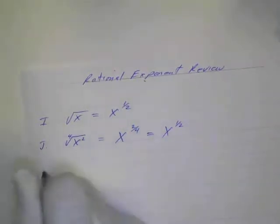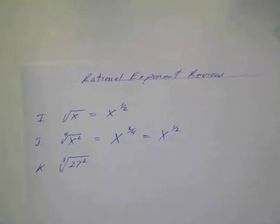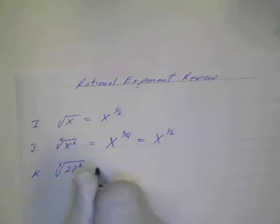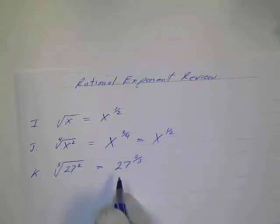And letter k. The cube root of 27 squared. So again, this would be the denominator, and this would be the numerator, so that would be 27 to the two-thirds. All right? And it says simplify as possible, so we could simplify this.